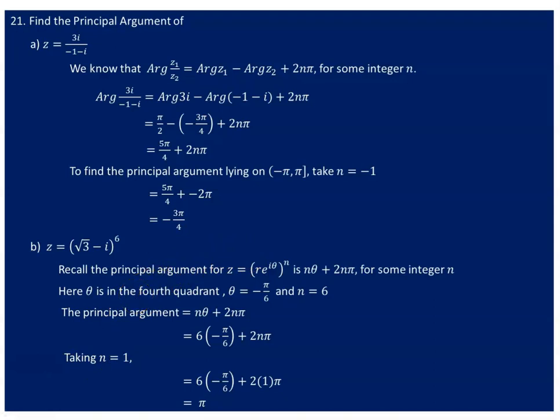These two values can also be obtained by first simplifying the given expressions and trying to find the arguments directly. For instance, for the first one, 3i over minus 1 minus i, you can take the conjugate of the denominator and multiply both numerator and denominator by it. You will obtain a certain x plus yi value, and finding the principal argument of the resulting complex number will give the same result. To be continued.